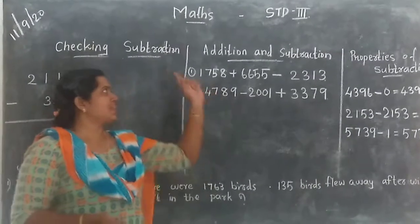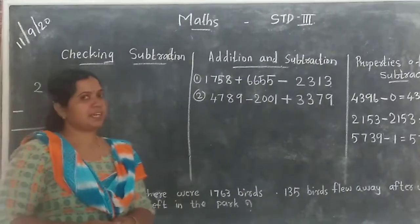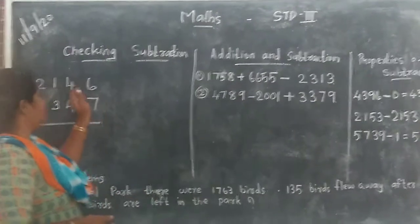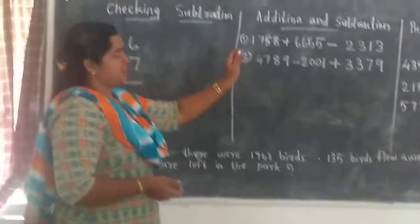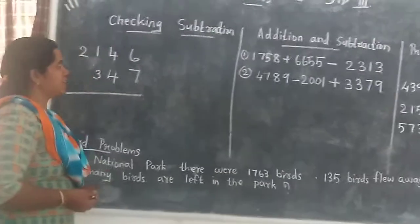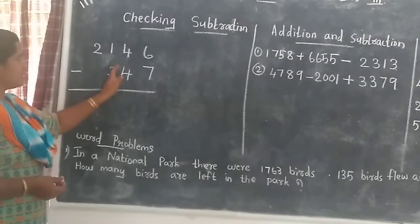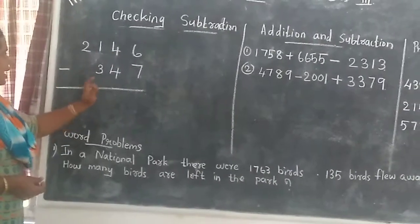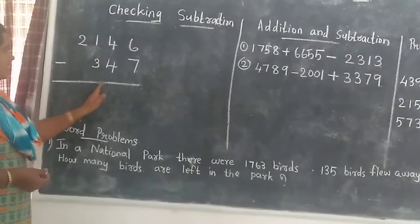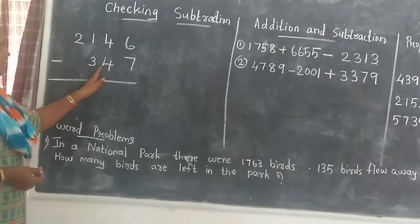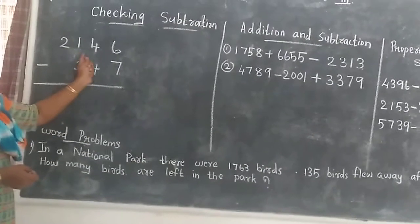Good morning students. Welcome to our next class for Standard 3. We are learning the chapter subtraction. In checking subtraction, we look at addition and subtraction together and properties of subtraction. Checking subtraction means first we subtract the second number from the first number, and after we get the answer, we add the answer and the second number — then we get the first number. If our subtraction is correct, we get the same number back.